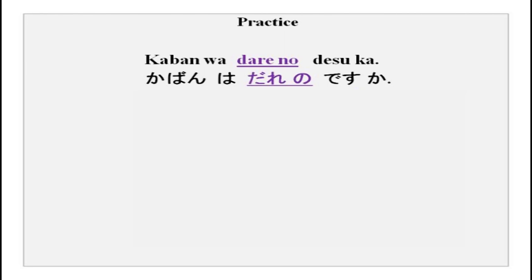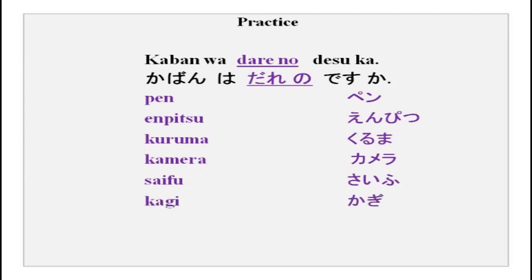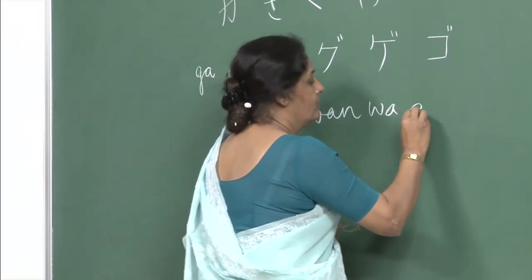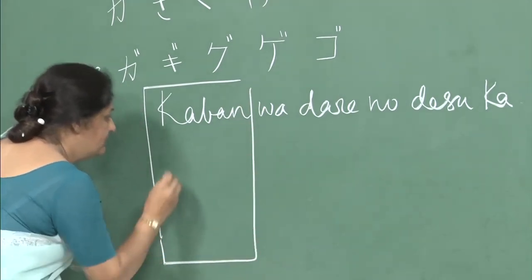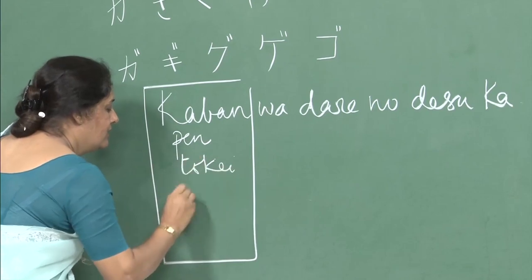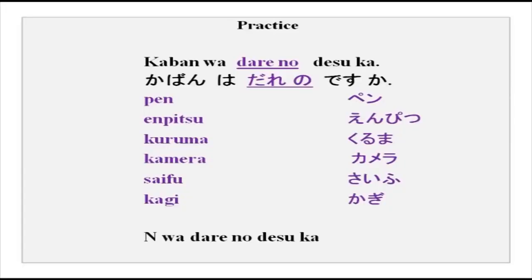For example: pen, empitsu, kuruma, kamera, saifu, kagi. You can put any of these in place of kaban. In place of kaban, you can put pen, tokei, hon, jisho, or any other noun and ask whose it is. Noun wa dare no desu ka — whose is this.